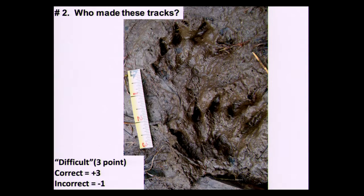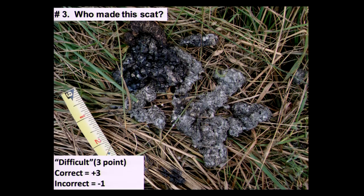This one is river otter tracks. We've got webbing and five toes on each foot. That's a difficult question — if you got it correct, you get three points. If you didn't call it river otter, negative one. The otter scat was also a difficult question: three points for correct, negative one if not.